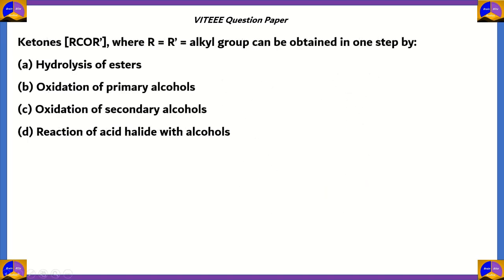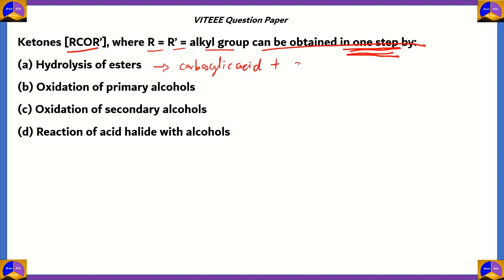Now let's look at the next question. Ketones, which are RCOR', where R and R' are alkyl groups, can be obtained in one step by: A) hydrolysis of esters, B) oxidation of primary alcohols, C) oxidation of secondary alcohols, D) reaction of acid halide with alcohols. There are many ways to obtain ketones, but the catch is we have to get it in one step. Option A — ester hydrolysis — in its first step gives you a carboxylic acid plus alcohol, so further steps are needed; option A is incorrect. Option B — oxidation of primary alcohols — gives you aldehydes and carboxylic acids in its first step, so option B is also incorrect.